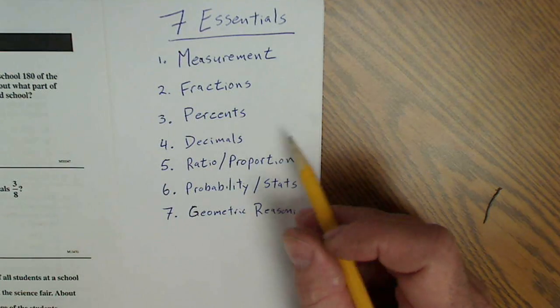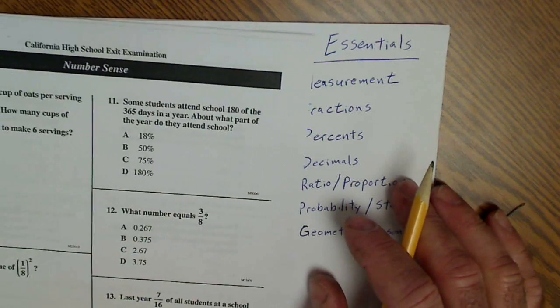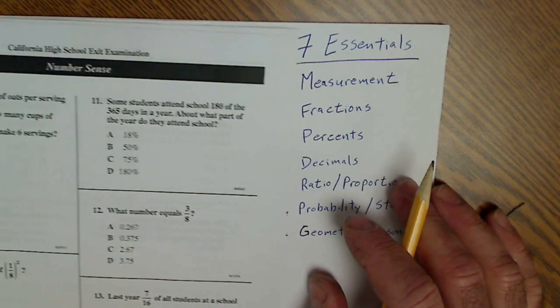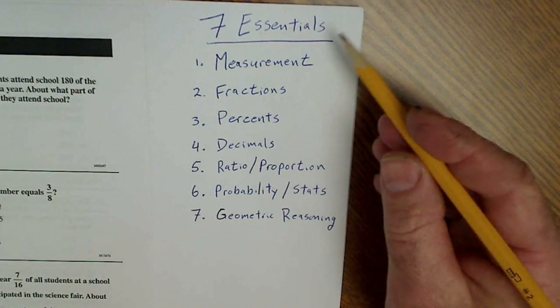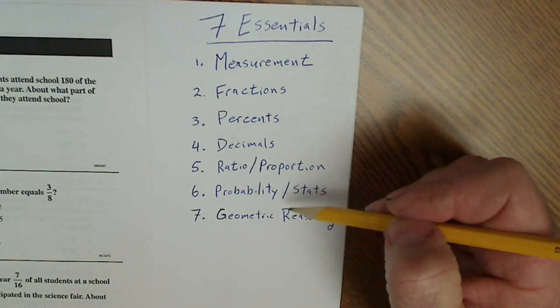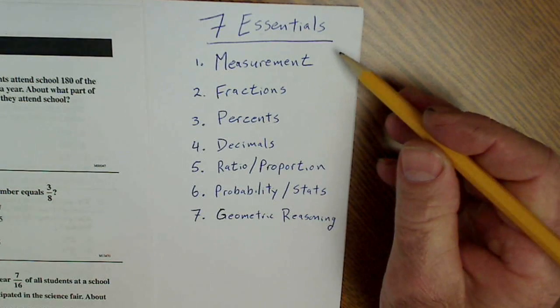Okay, I'm going to go over the California high school exit exam. It's going to go over a few problems here. Before we start, let me just talk about the seven essentials.